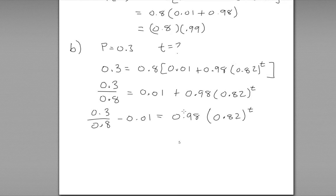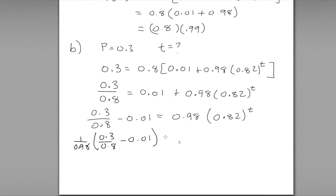To continue isolating t, we divide both sides by 0.98, giving (1 divided by 0.98) times (0.3 divided by 0.8 minus 0.01) equals 0.82 to the power of t. Now we need to get t out of that exponent. In principle you could take the log base 0.82, but it's more natural to use the natural logarithm.